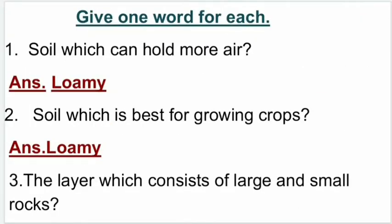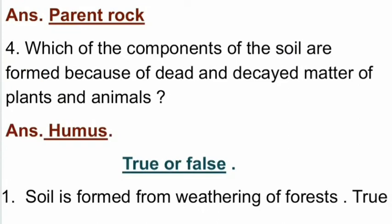Give one word for each. First one: soil which can hold more air. Answer: loamy soil. Second one: soil which is best for growing crops. Answer: loamy soil. Third one: the layer which consists of large and small rocks. Answer: parent rock. Fourth one: which component of the soil is formed because of dead and decayed matter of plants and animals? Answer: humus.